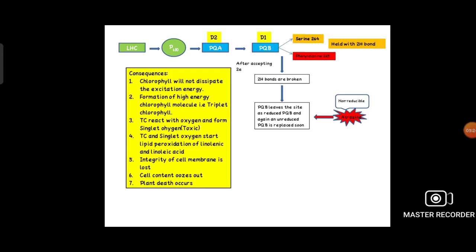The cell membrane consists of lipids and proteins. When this peroxidation process occurs, the lipid membrane will disintegrate. As a result, the cell contents will ooze out from the cell and plant death will occur. This is how the photosystem II inhibition process occurs by atrazine.